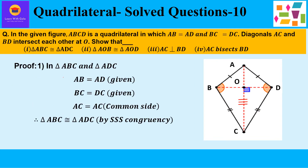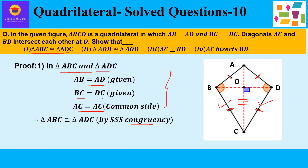Let us start with the first part, where we have to prove that triangle ABC is congruent to triangle ADC. In triangle ABC and triangle ADC: first condition, AB is equal to AD — these are two adjacent sides equal to each other. Second condition, BC is equal to DC — also two adjacent sides which are equal. Third condition, AC is equal to AC — that is the common side shared by both triangles. By these three conditions of SSS congruency, triangle ABC is congruent to triangle ADC.